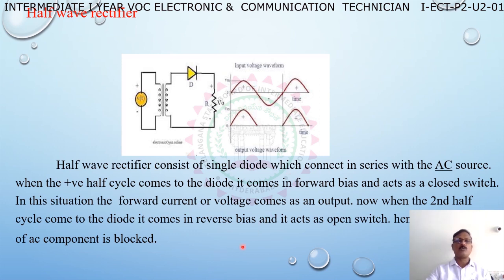When the positive half cycle comes to the diode, it comes into forward bias and acts as a closed switch. In this situation, the forward current or voltage comes as an output. When the negative half cycle comes to the diode, it comes into reverse bias and acts as an open switch. Hence, the negative half cycle of the AC component is blocked.